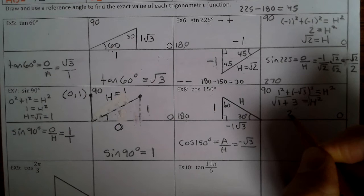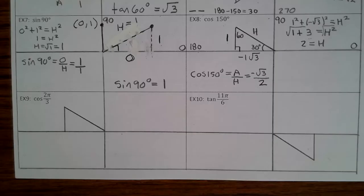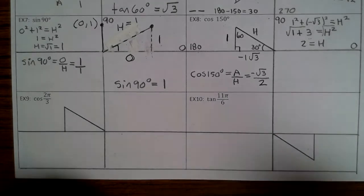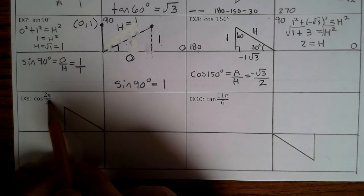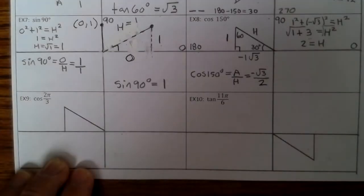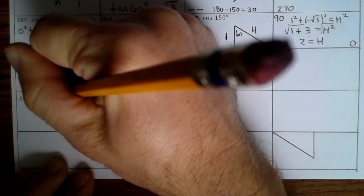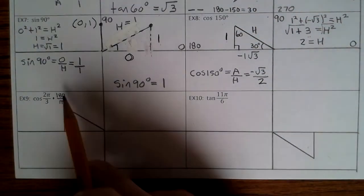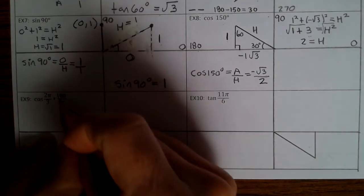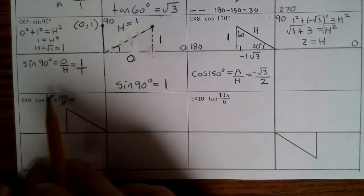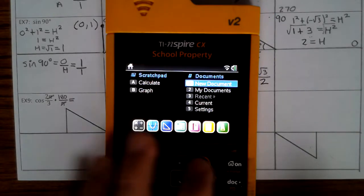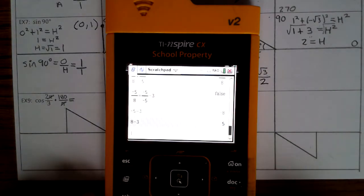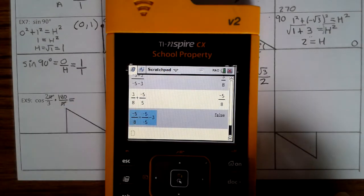Example 9. We need to convert 2π/3 to degrees, so we multiply by 180 divided by π. The pi's divide out, leaving 2 times 180 divided by 3. Using a calculator: 360 divided by 3 is 120. So cosine of 2π/3 is cosine of 120 degrees.